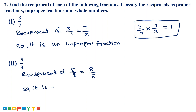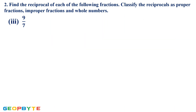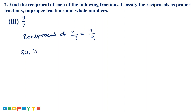Next: 6/7. Reciprocal of 6/7 is 7/6. Here the numerator is greater than the denominator, so it is an improper fraction. For the next one, the denominator is greater than the numerator, so it is a proper fraction. A fraction is called a proper fraction when the denominator is greater than the numerator.